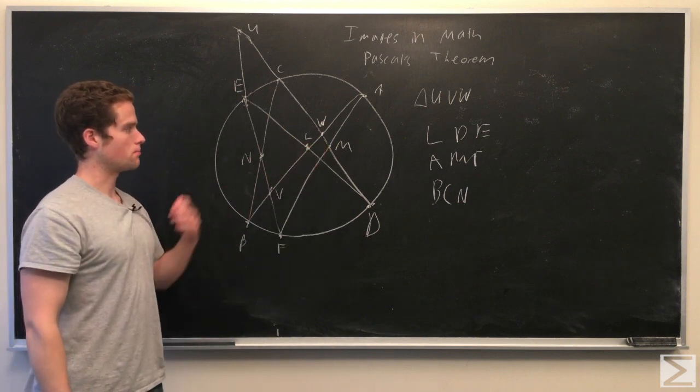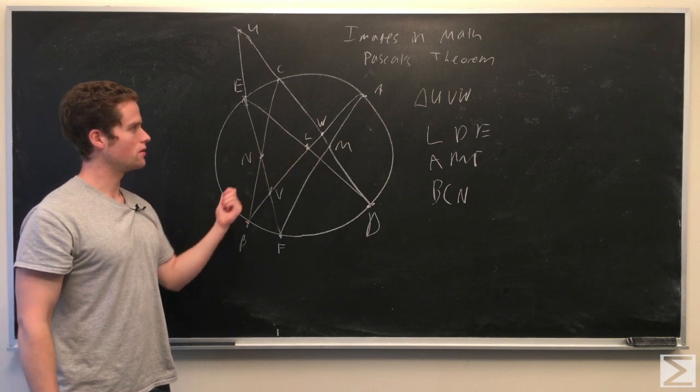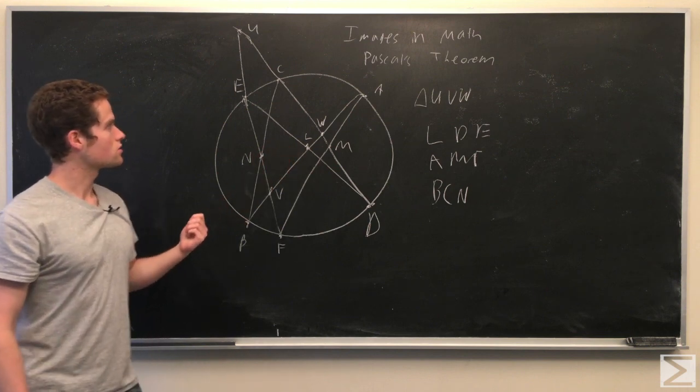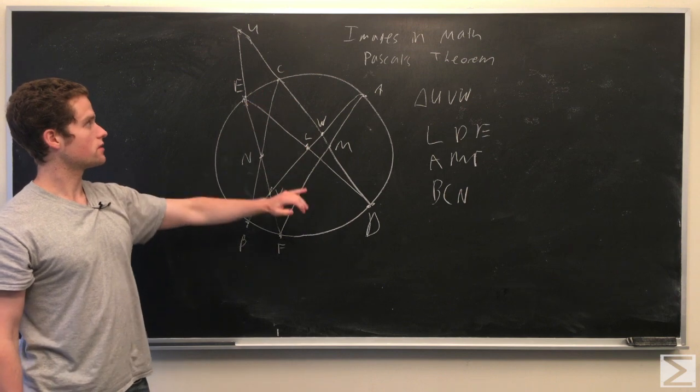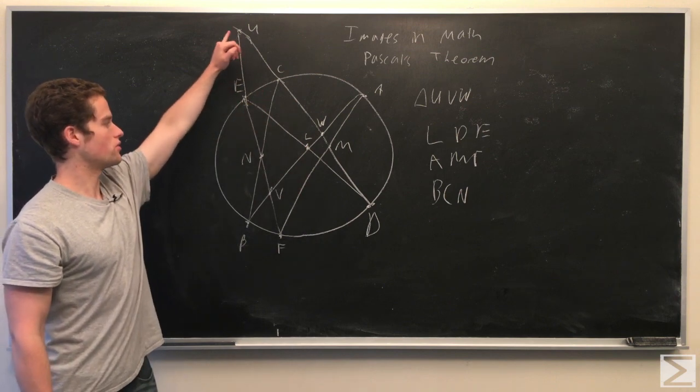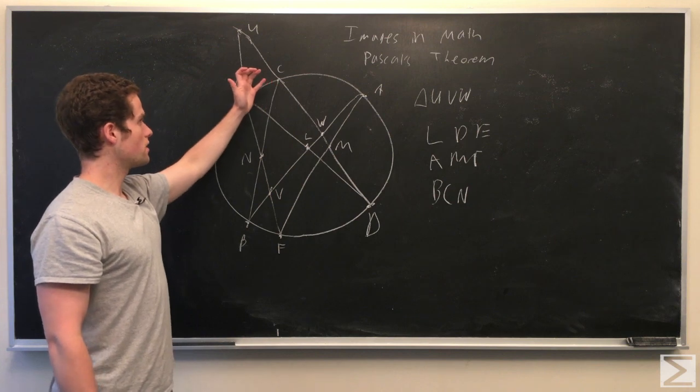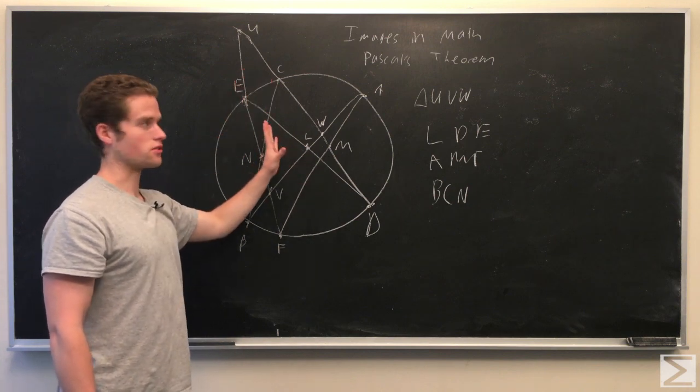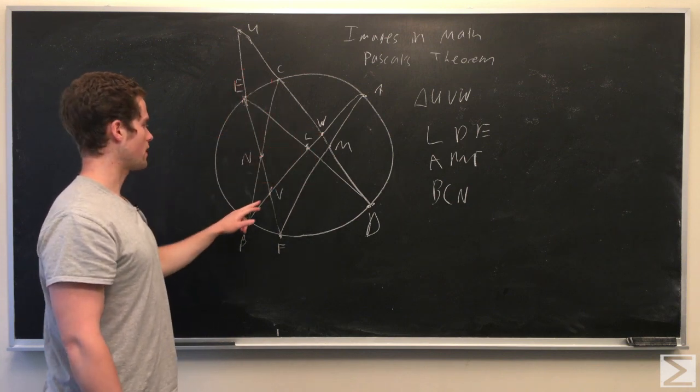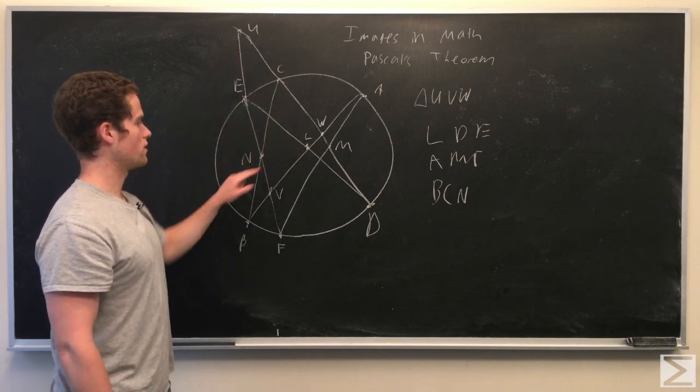We're going to use Menelaus's Theorem and power of point to prove this. First we're going to extend EF, CD to the intersection of point U. We have some additional intersectional points at W and at V. So we have a triangle U, V, W.